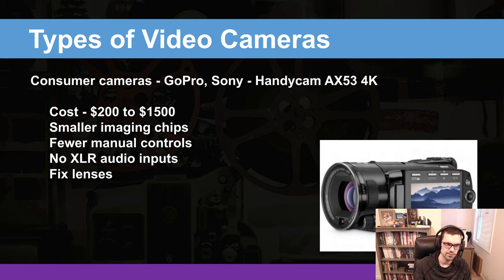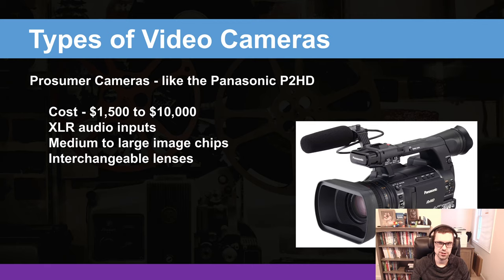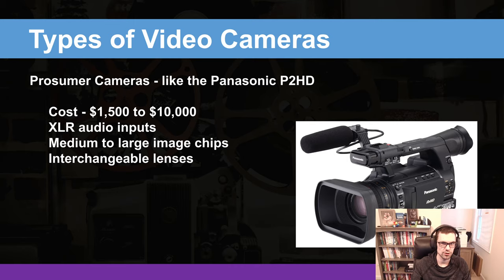Up next are prosumer cameras — something like the Panasonic P2HD, a little more professional grade. You might see one in an auditorium doing a live stream. They cost from $1,500 to about $10,000, have XLR inputs, medium to large imaging chips, and interchangeable lenses. They're designed to produce professional video in a studio environment, and can also be taken out for on-location shoots when needed.